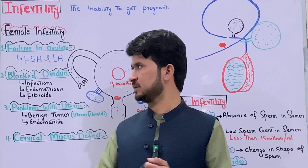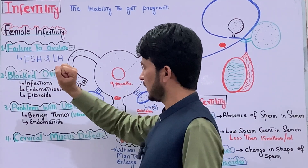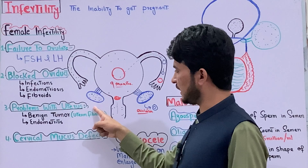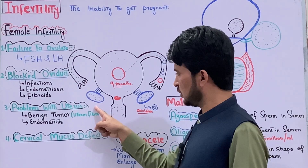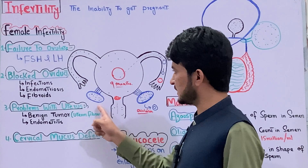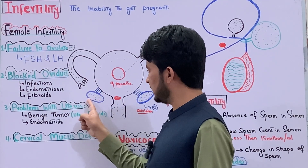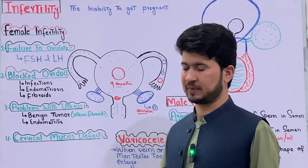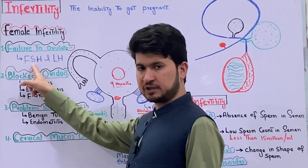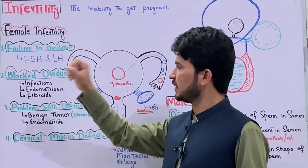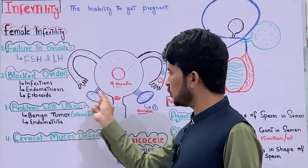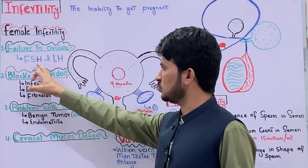The causes of female infertility: the first cause is failure to ovulate — the female does not release an egg. The second reason is that the FSH hormone or the LH hormone is not secreted properly, disrupting the ovulation process.